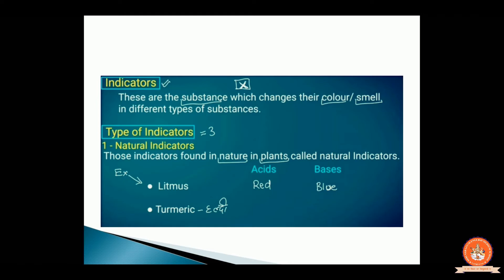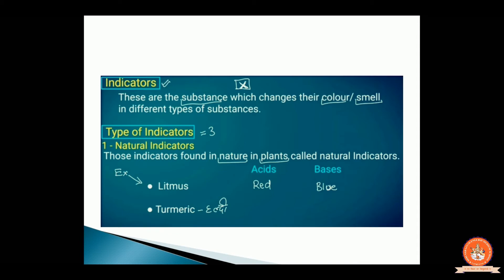There are three types of indicators. The first is natural indicators. Natural indicators are litmus and turmeric, which we get from nature. Litmus is used to identify acid — it changes to red color — and when litmus is used to identify a base, it changes to blue. Turmeric — you can call it haldi — when used to identify acid, it stays in its original yellow color; if it changes to red, there is a presence of base.